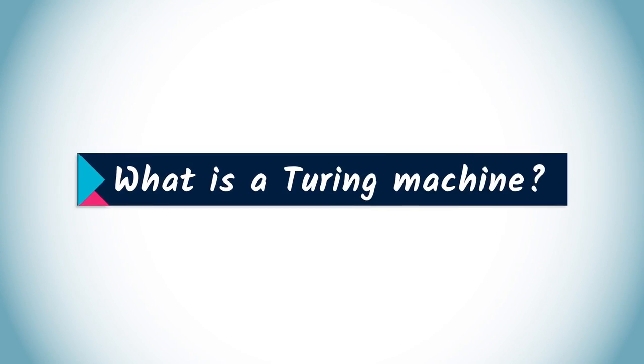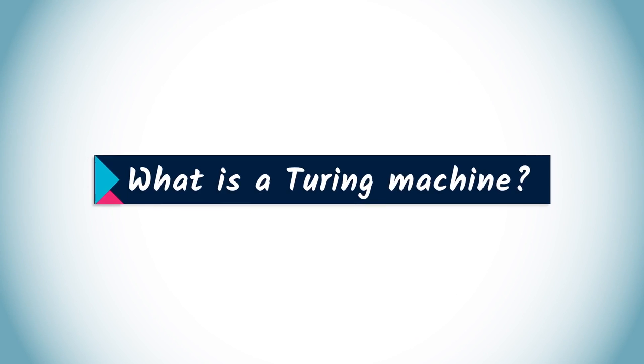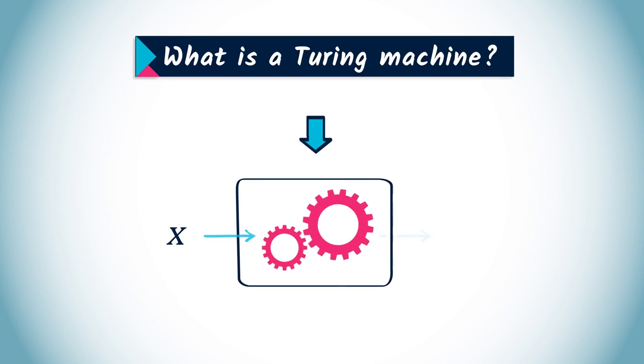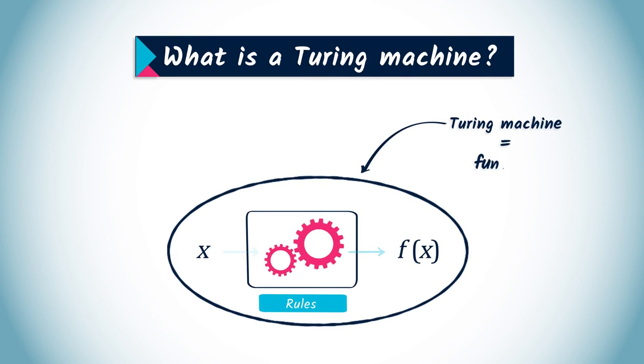What is a Turing machine? Informally speaking, a Turing machine just computes an output based on an input by following a set of rules. Just like a function?